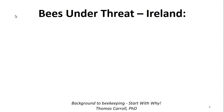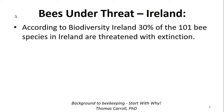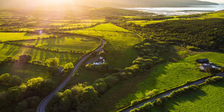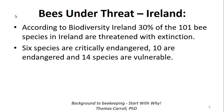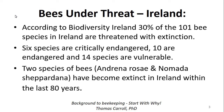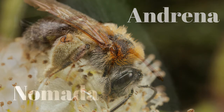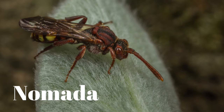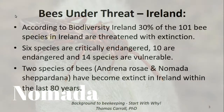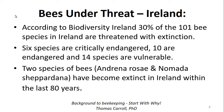Bees are under threat. Taking Ireland as an example: according to Biodiversity Ireland, 30 percent of the 101 bee species in Ireland are threatened with extinction. Ireland is a country known for its greenness and natural environment, and yet 30 percent of bee species are threatened with extinction — which is shocking. Six species are critically endangered, 10 are endangered, and 14 species are vulnerable. Two species of bees have become extinct in Ireland within the last 80 years, driven by big changes in the landscape.